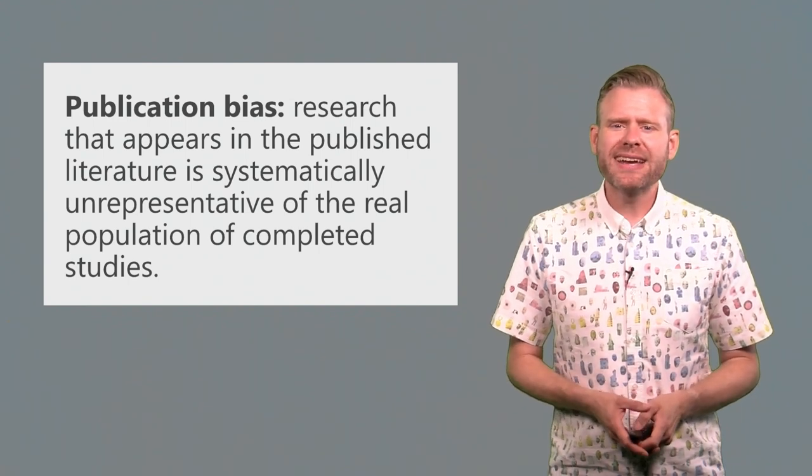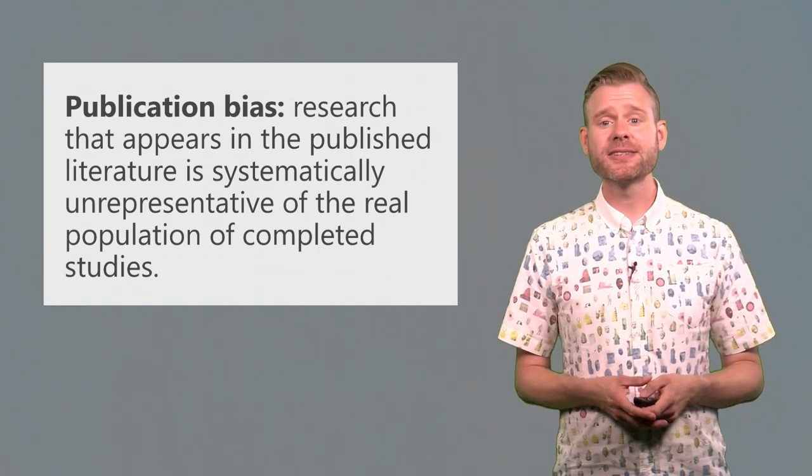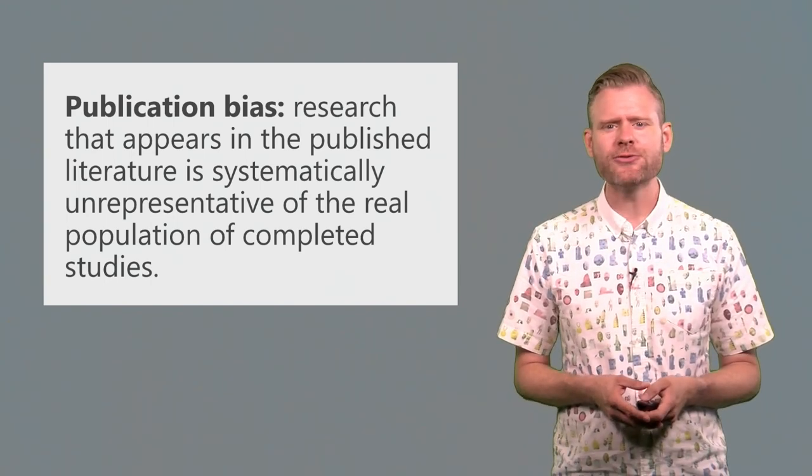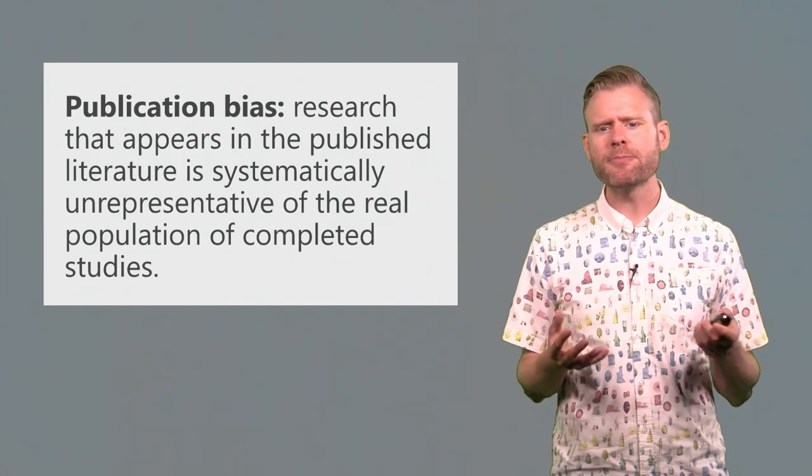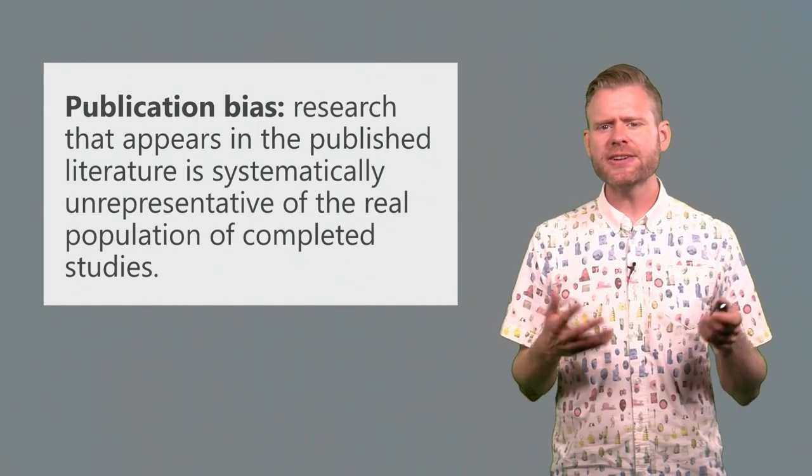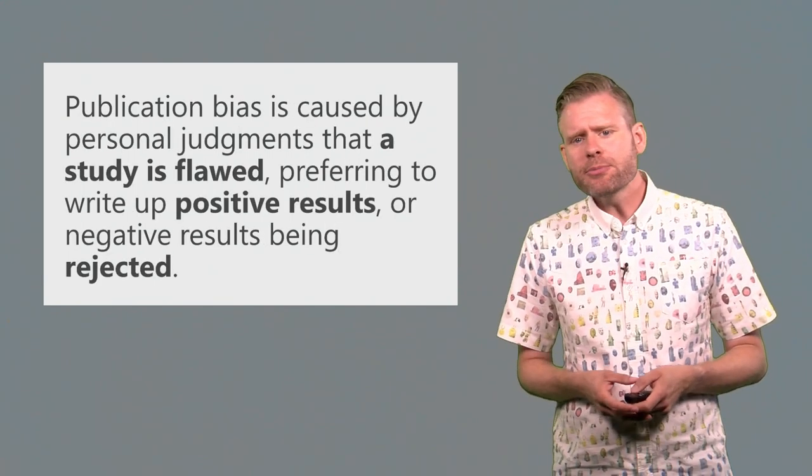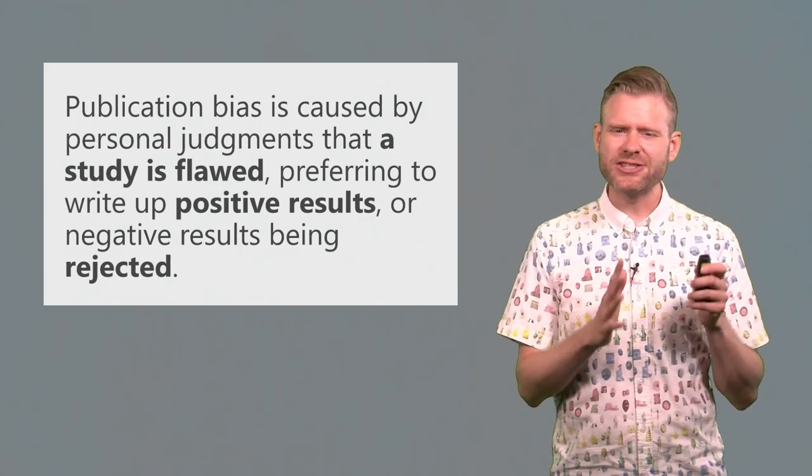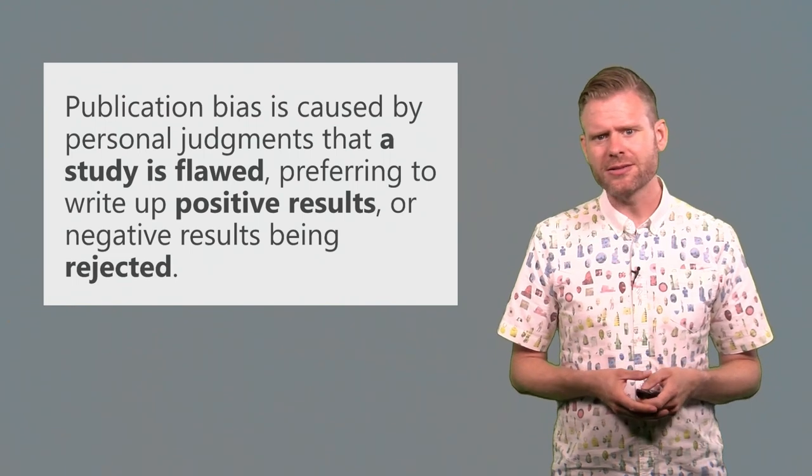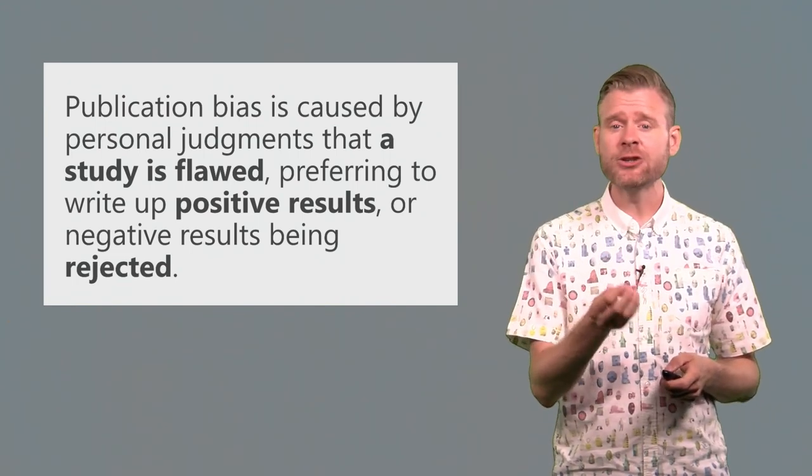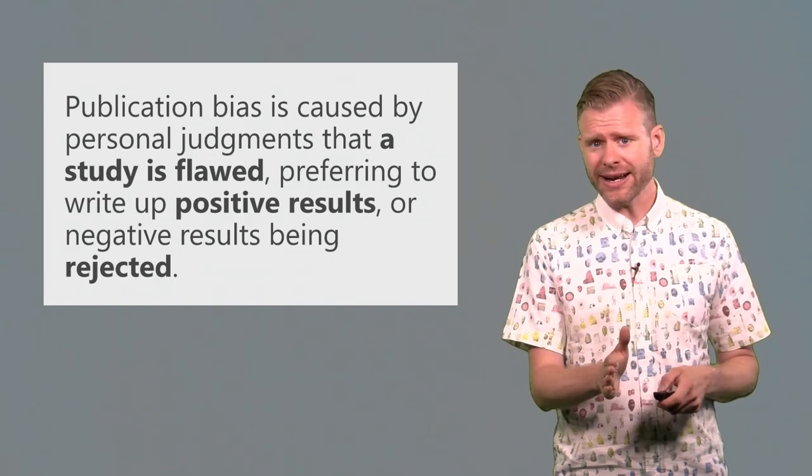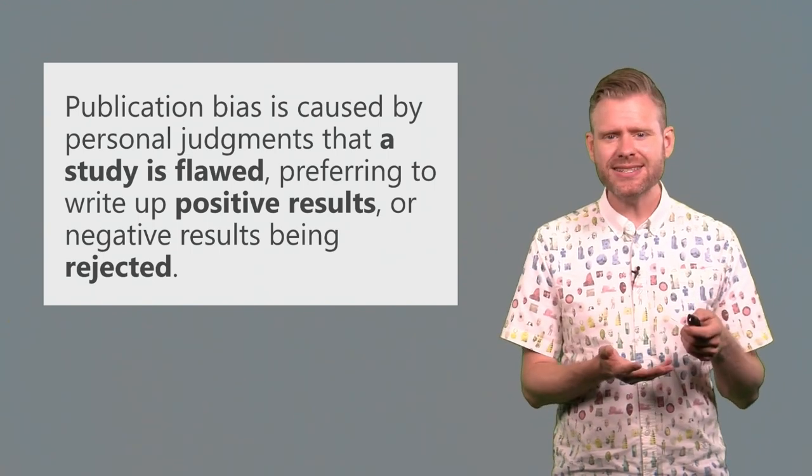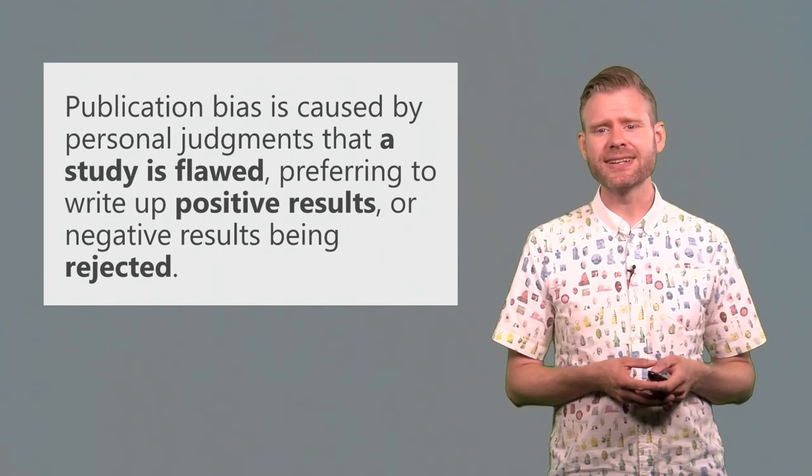Let's finally take a look at publication bias, one of the major sources of bias in the published literature. Research that appears in the published literature is systematically unrepresentative of the real population of completed studies. And there are several reasons for this. For example, you might have a personal judgment that a study that you performed turns out that it wasn't actually as good as you thought before you saw the results. So based on the results, you decide that the study didn't do what you intended to do. This might be correct, it might be introducing bias, and it's probable that you'd had this thought a little bit less if the results had turned out statistically significant.